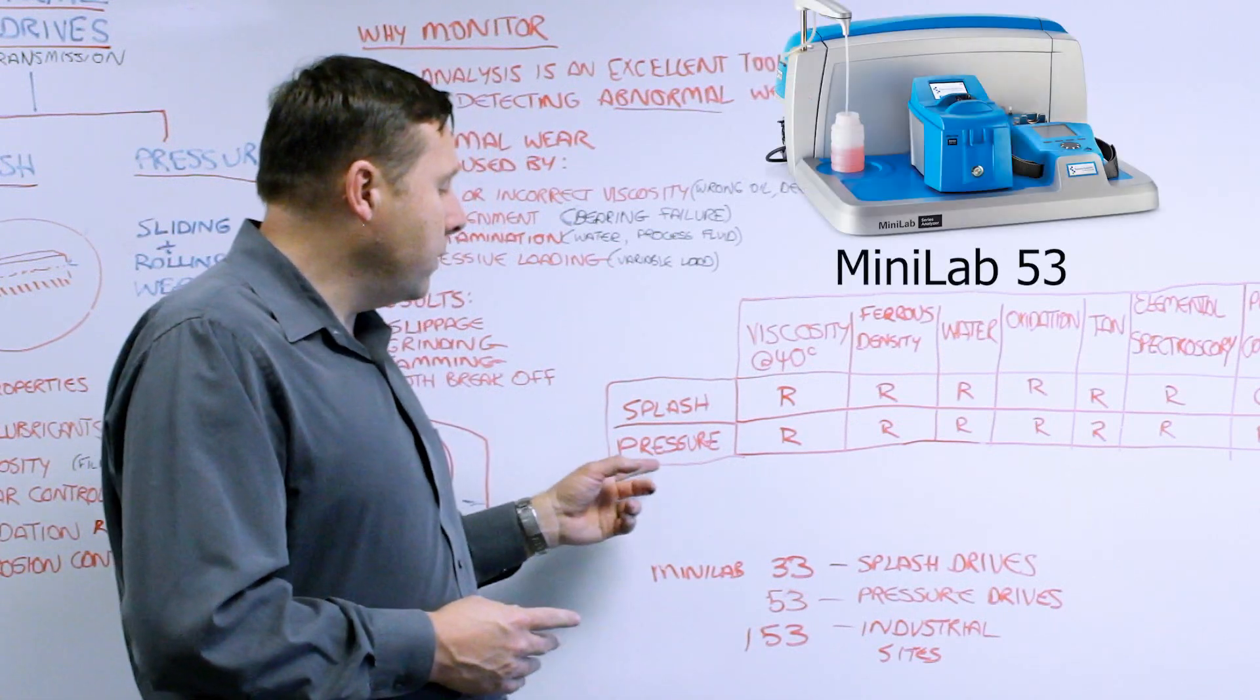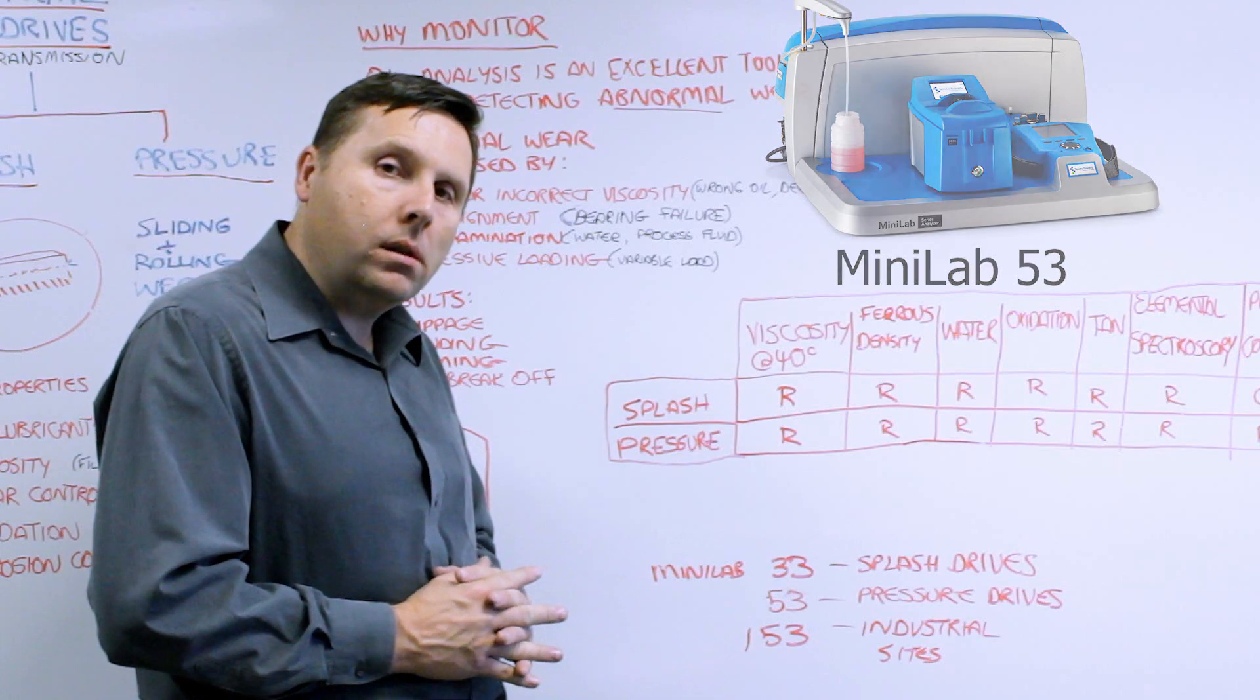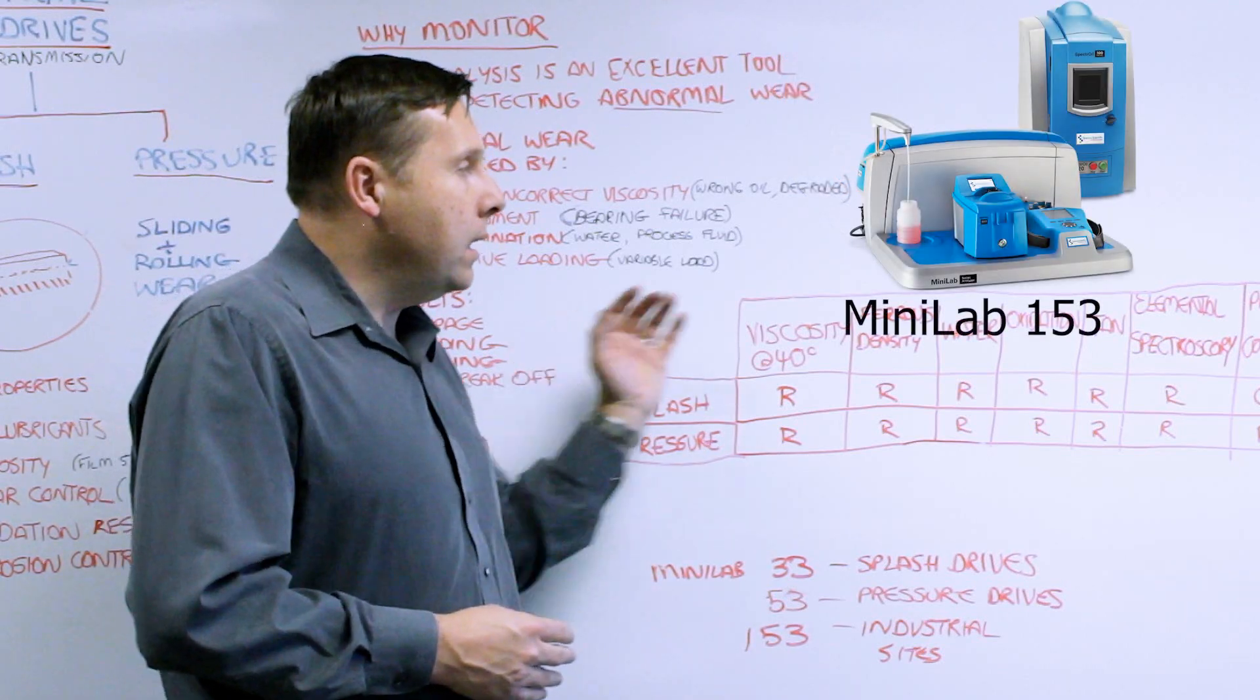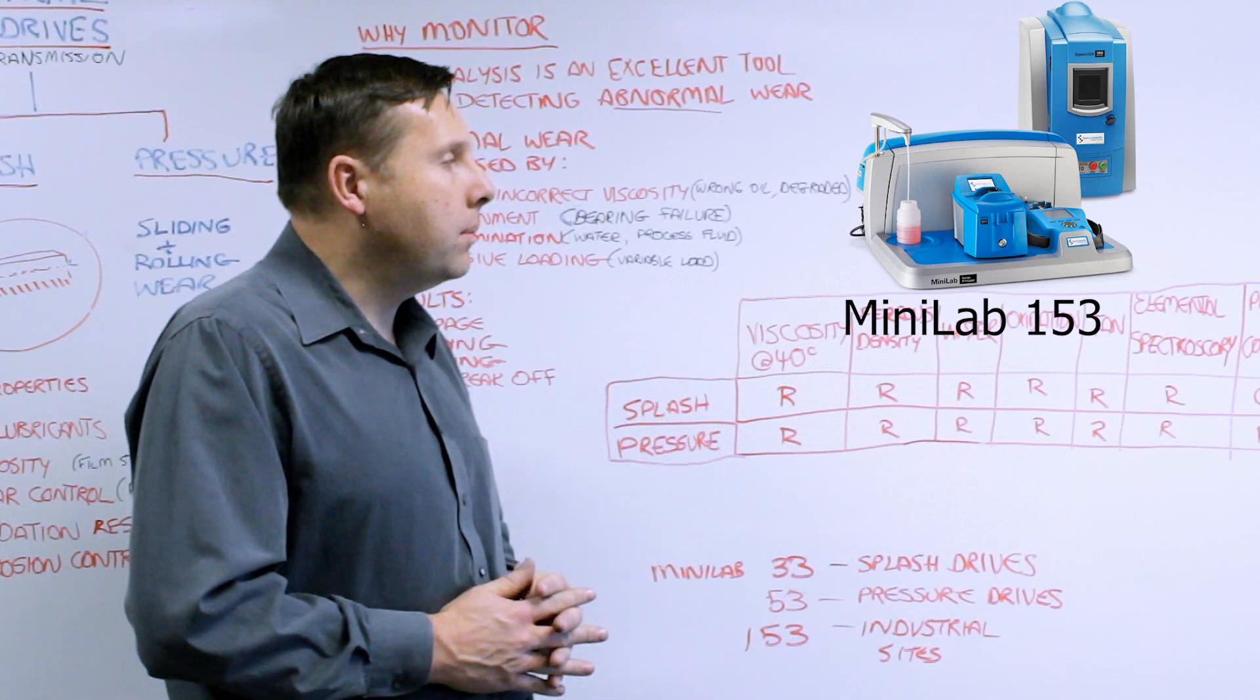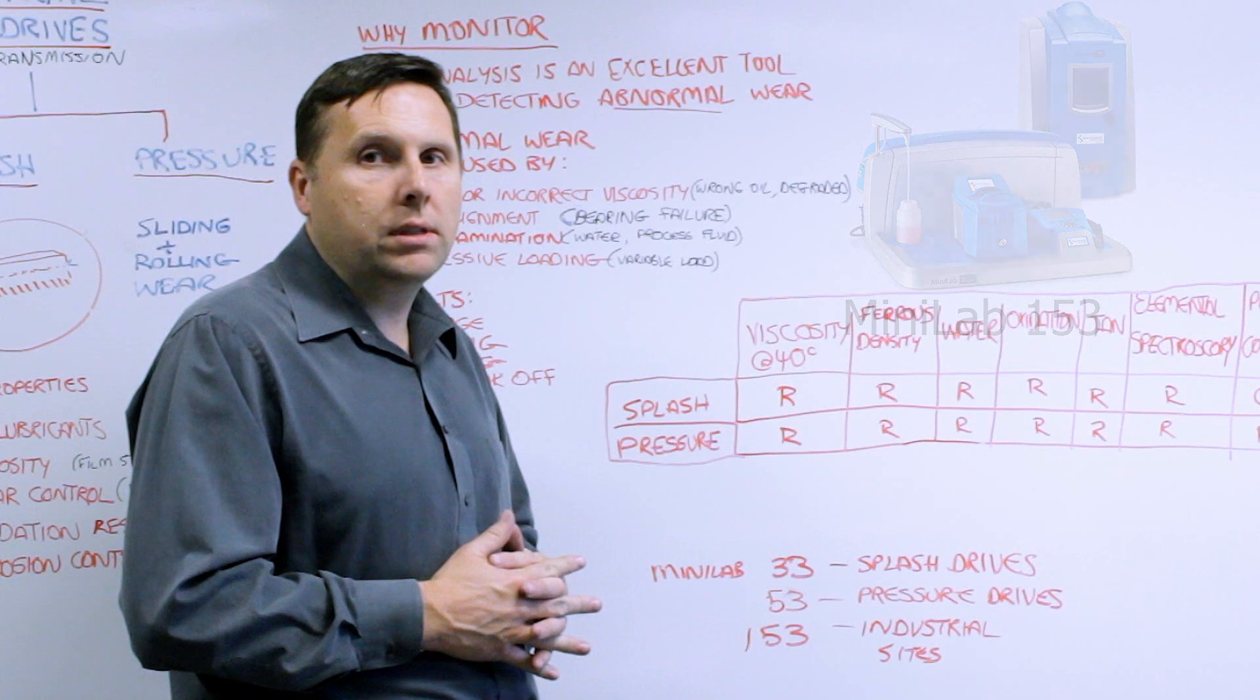The 53 is perfect for pressurized systems because it's got the particle count and the ferrous particle count included. And then the 153 system includes the elemental spectroscopy and it's ideal for all types of industrial systems.